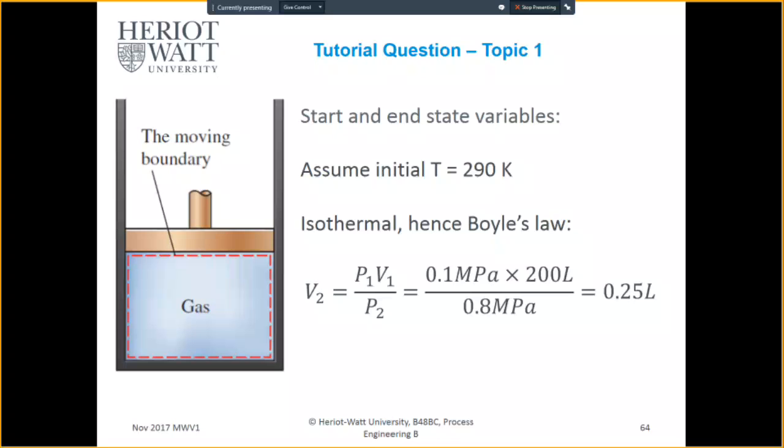To calculate the second volume, it's PV equals PV. V2 equals P1 V1 over P2, which is Boyle's law, giving V2 equals 0.25 liters.